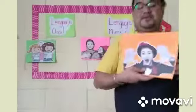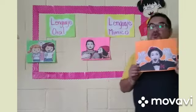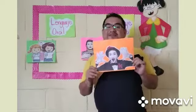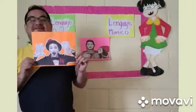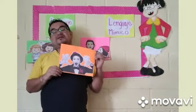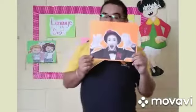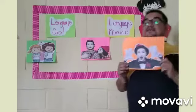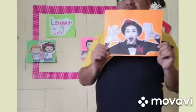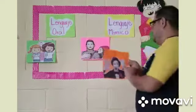También tenemos acá otra imagen. Otro compañerito de ustedes nos va a ayudar. Denis, ayúdame a clasificar esta imagen en dónde consideras que va. ¿Va en el lenguaje oral o va en el lenguaje mínimo? Muy bien, Denis. Denis nos dice que esta imagen va posicionada en el lenguaje mínimo.